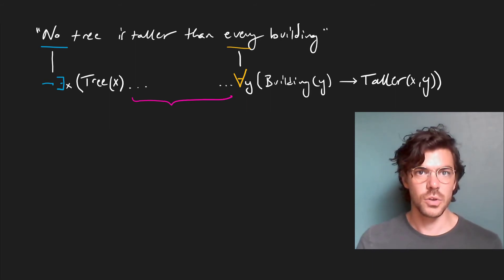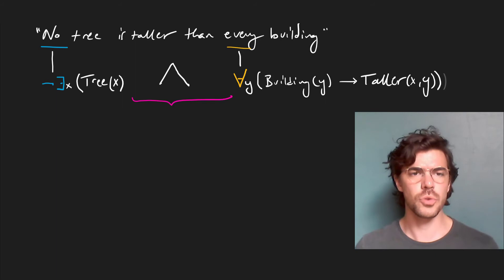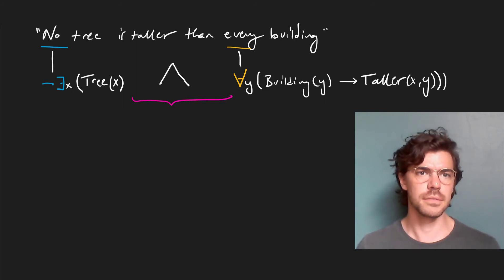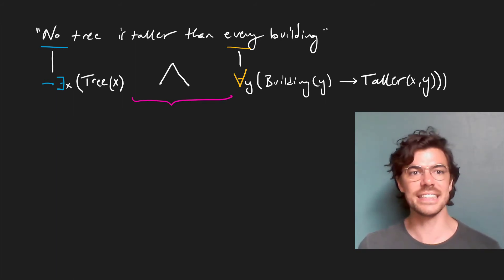And we do that with a conjunctive sign. So reading from left to right here, in somewhat stilted logic-ese, we can say there doesn't exist an x that is a tree and for every y, if y is a building, then x is taller than y.